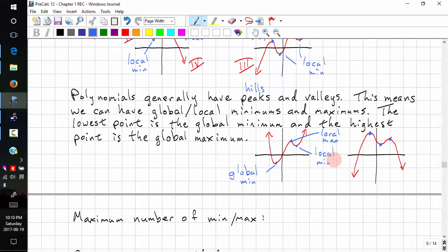So the number of local minimums and maximums must match the number of hills and valleys. We can also call a global minimum a local minimum, but to be more specific, you want to call it a global, if that's the case.